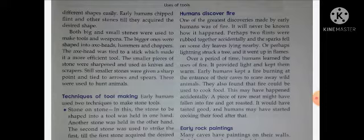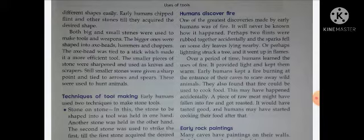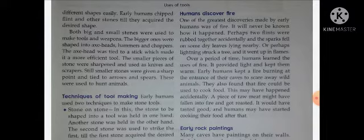It will never be known exactly how it happened. Lekin abhi tak yeh nahin jana gaya hai ki yeh kaise hua, unhein kaise idea aaya. Lekin bataya jaata hai ki do flint stones the, unko aapas mein rub kiya gaya, accidentally spark hua — achanak se chingaari nikli — on some dry leaves lying nearby, aur uske aaspaas jo bhi sukhi pattiyan padi thi, woh jalne lagi.